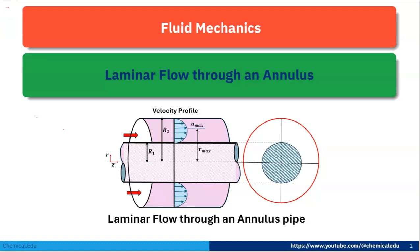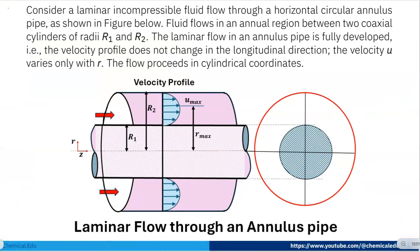Today I'll talk about laminar flow through an annulus. Consider a laminar incompressible fluid flow through a horizontal circular annulus pipe as shown in the figure below. Fluid flows in the annular region between two coaxial cylinders R1 and R2. The laminar flow in the annulus pipe is fully developed, so the velocity profile doesn't change in the horizontal direction. The velocity U varies only with R, and the flow is analyzed in cylindrical coordinates.